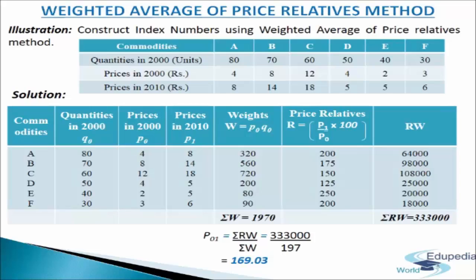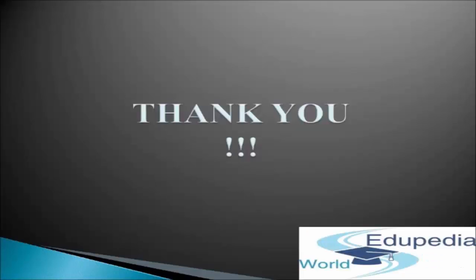Applying the formula P01 = ΣRW / ΣW = 3,33,000 / 1970, we get 169.03 as the index number by the Weighted Average of Price Relatives method. Thank you for watching Edupedia World videos.